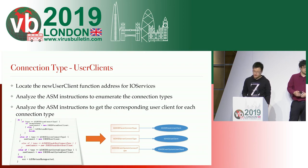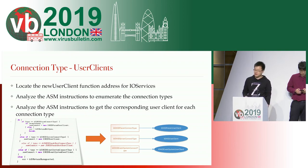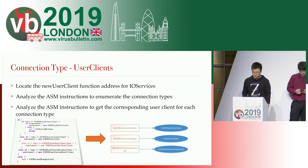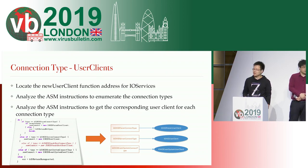For user client analysis, the final purpose is to get the connective user client map. Like the following example, given the assembly code snippet, we should output the mapping between the driver and the right user client. For getting that, we should look at the newUserClient function address in each driver first, then analyze the assembly instructions to enumerate the connection types as well as the corresponding user client.